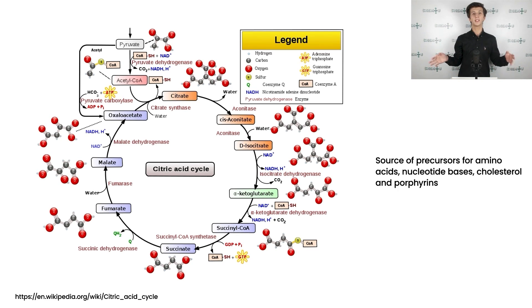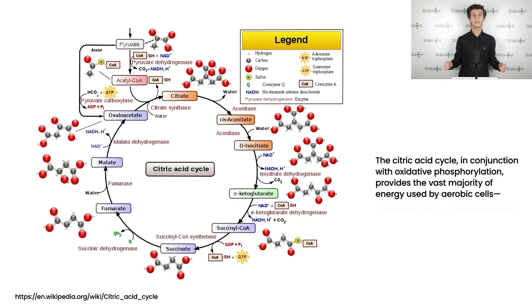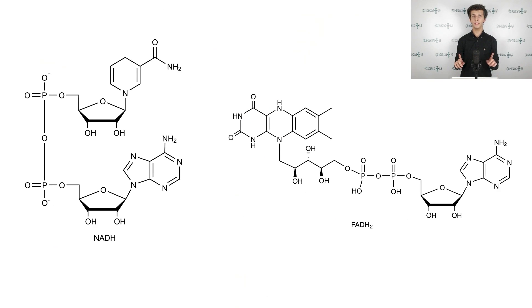You can see the complete cycle on the screen now. The cycle is also an important source of precursors, not only for the storage forms of fuels, but also for the building blocks of many other molecules, such as amino acids, nucleotide bases, cholesterol and porphyrin, the organic component of heme. The citric acid cycle, in conjunction with oxidative phosphorylation, provides the vast majority of energy used by aerobic cells, in human beings greater than 95%. It is highly efficient because a limited number of molecules can generate large amounts of NADH and FADH2.